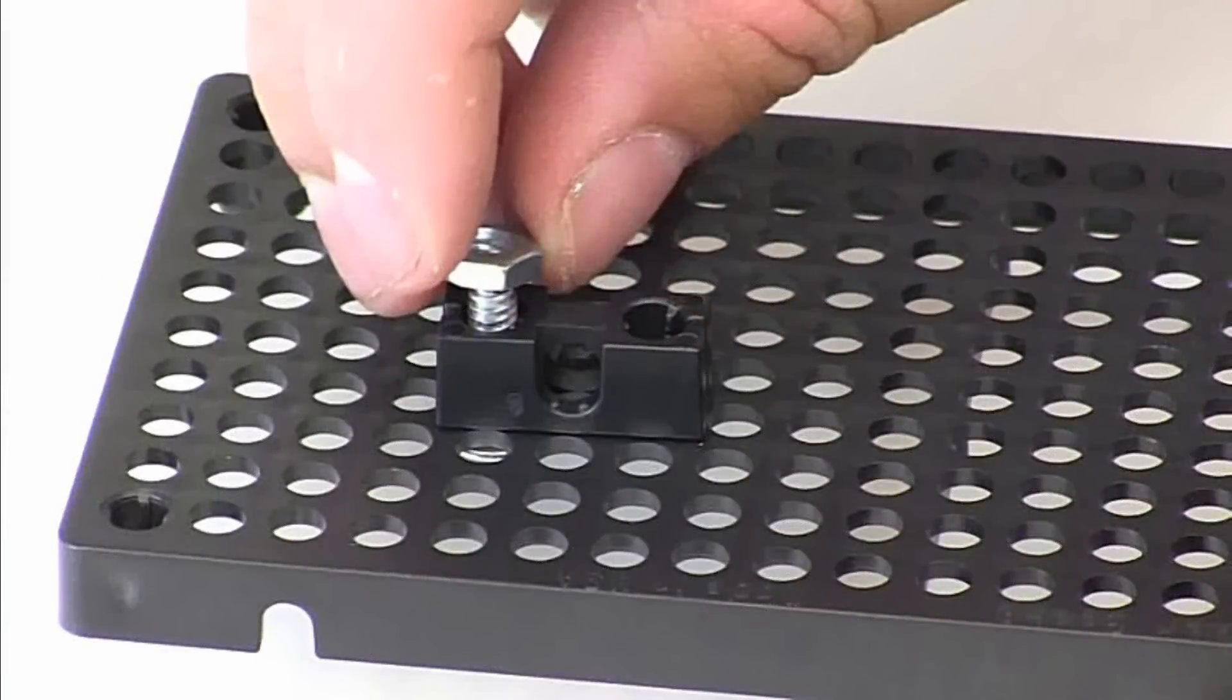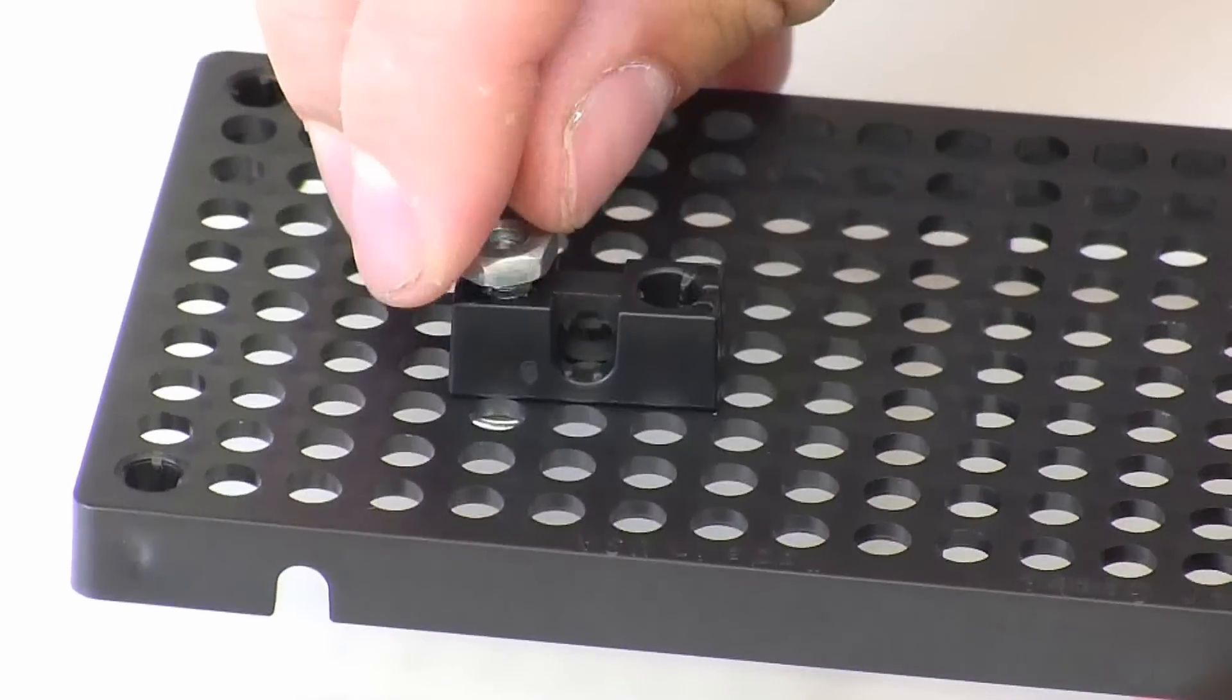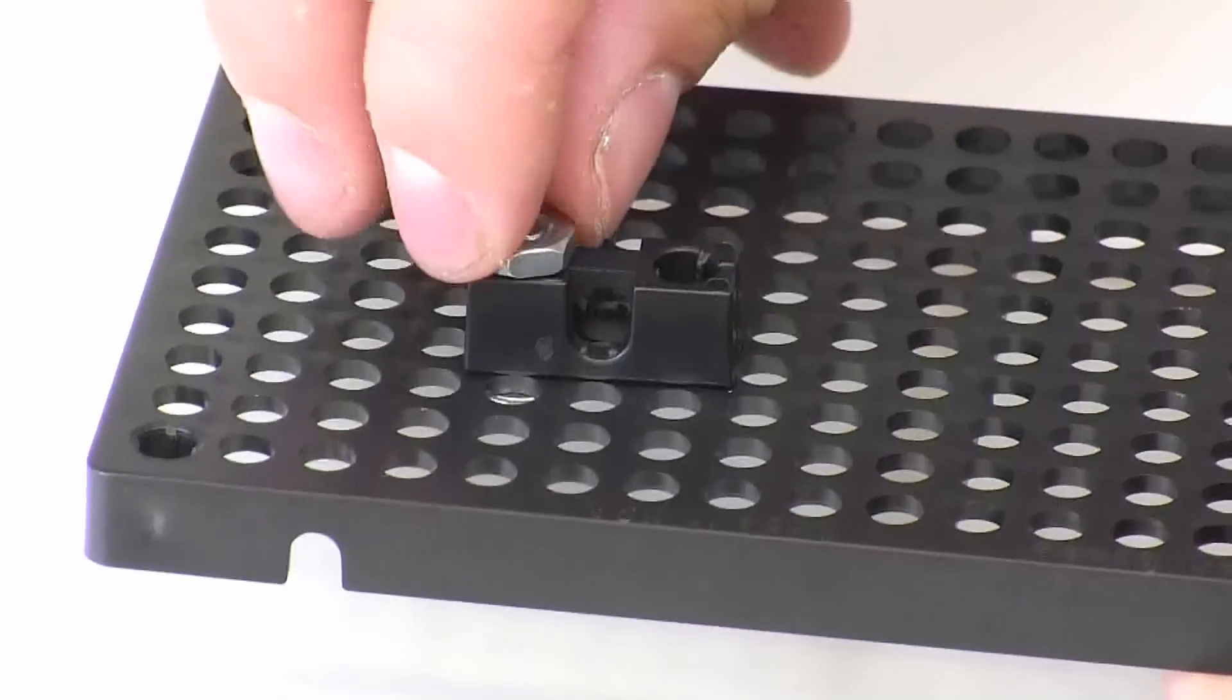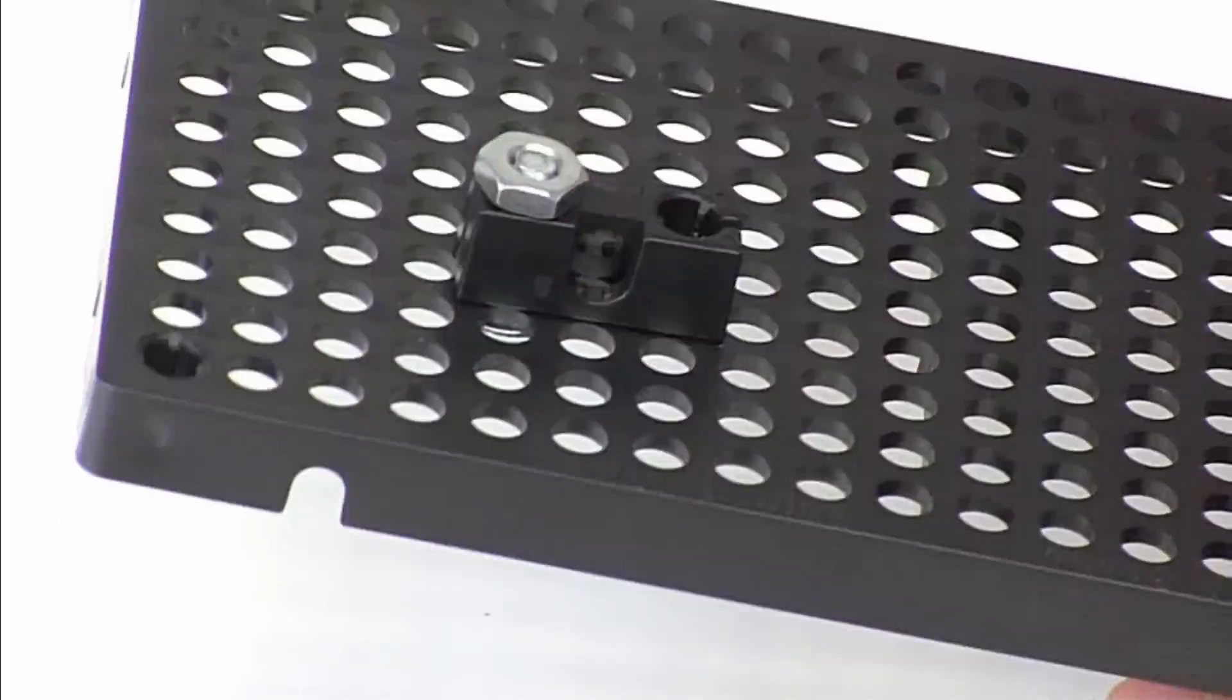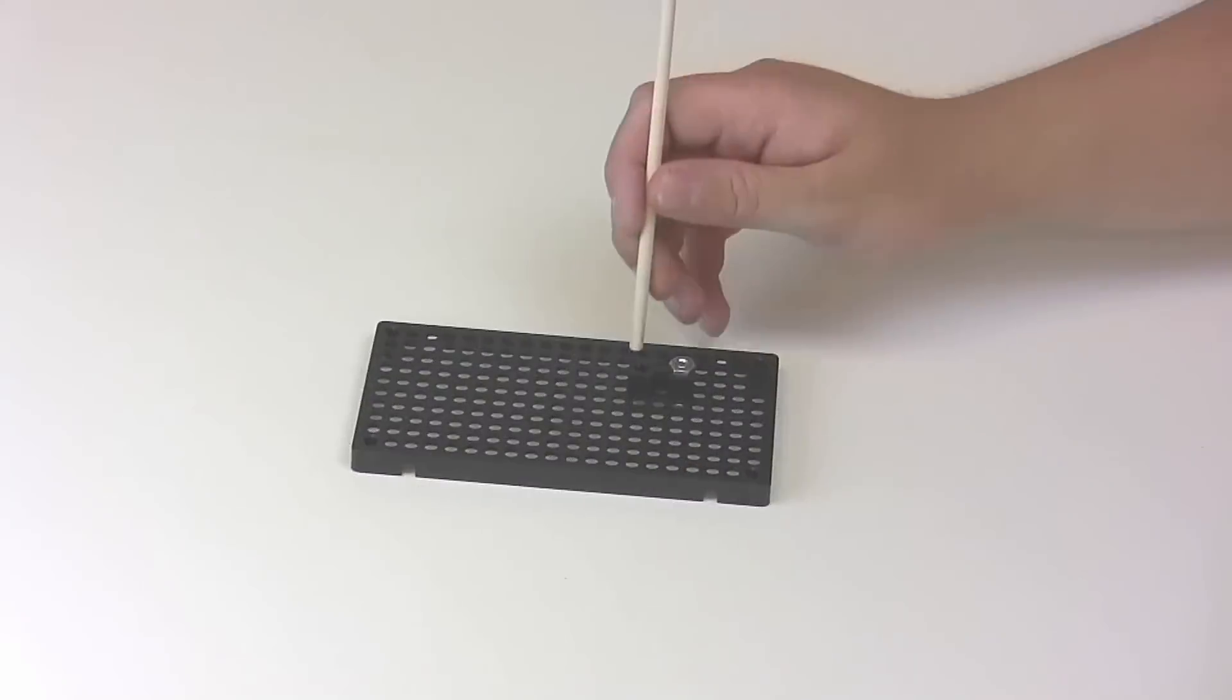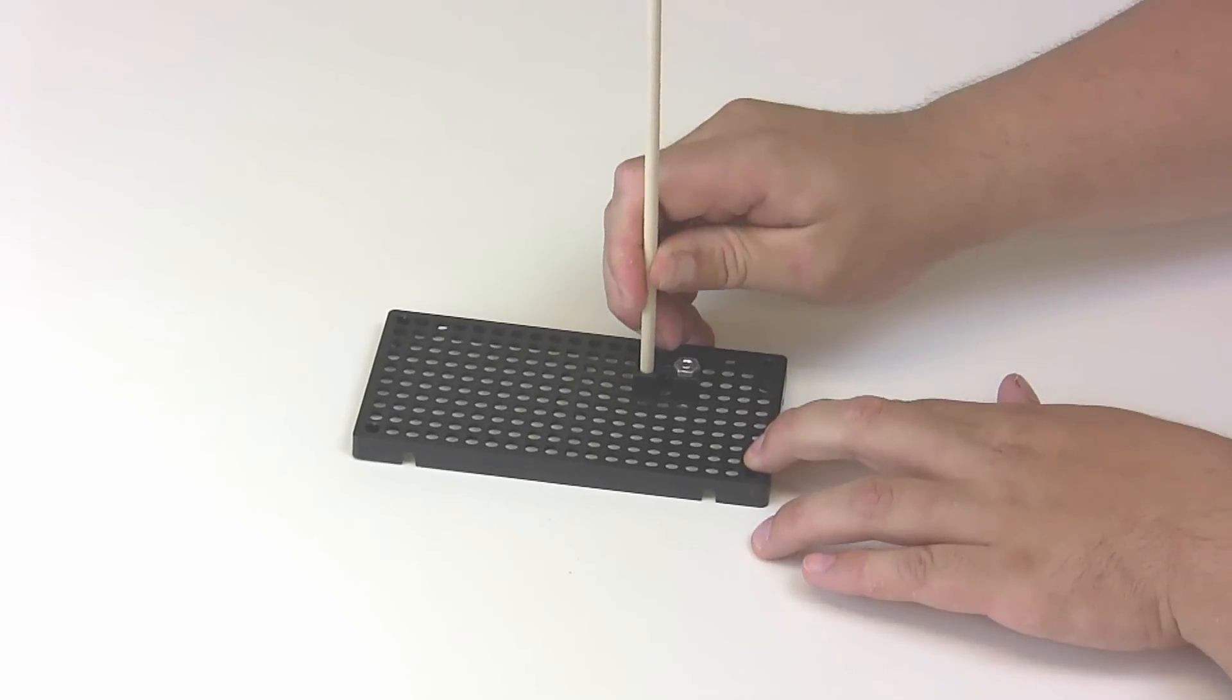Once you screwed your perpendicular block in, add another component on top and tighten it down. Just put the dowel under the perpendicular block and your base is complete.